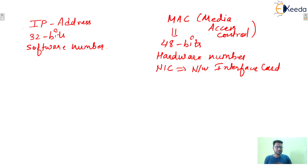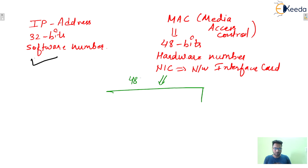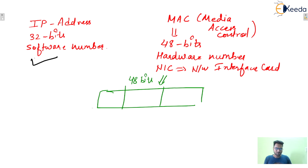IP addressing was already covered earlier. Now for MAC address, the format is that these 48 bits are divided into three sections. The first part is for the manufacturer or vendor — this is the vendor ID or manufacturer ID. The next field is for the date of manufacturing, and the next one is the serial number.